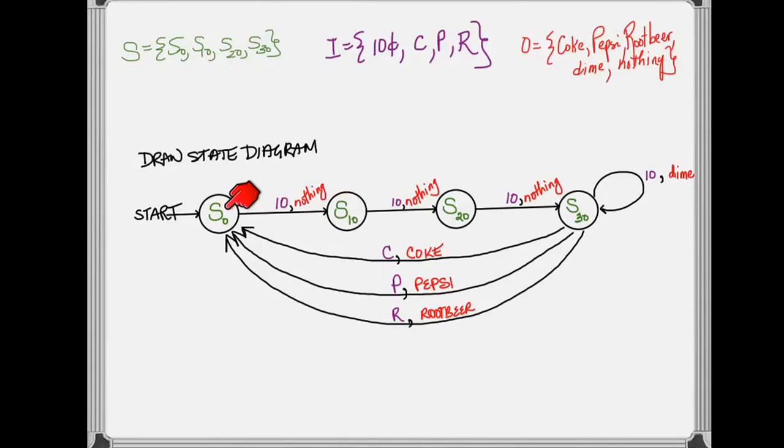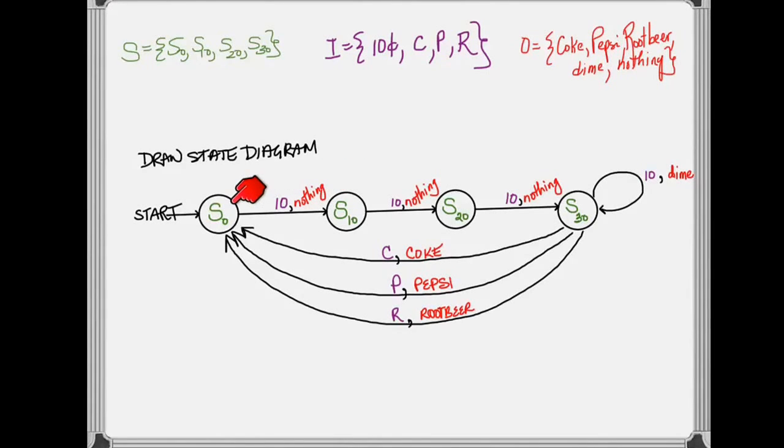So if I start at state S0, I insert a dime. So the inputs are in purple. If I insert a dime, the output should be nothing. So we're labeling it with the pair, 10, nothing. But my state will change from S0 to S10. This will continue from S10 to S20, if I do add a dime, and from S20 to S30, by adding another dime.